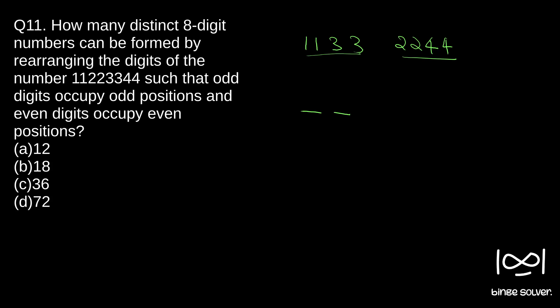And we have 8 positions, right? 1, 2, 3, 4, 5, 6, 7, 8. So in these 8 positions, odd digits can occupy only the odd positions. So effectively, we have only 4 positions to arrange odd digits and we have only 4 positions to arrange even digits also.